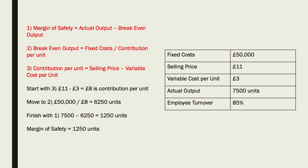Now you can use that number to slot into formula one at the top. You're given the actual output — that's 7,500 units — and you take away what you just worked out: 6,250. That comes to 1,250 units, and that's your margin of safety.